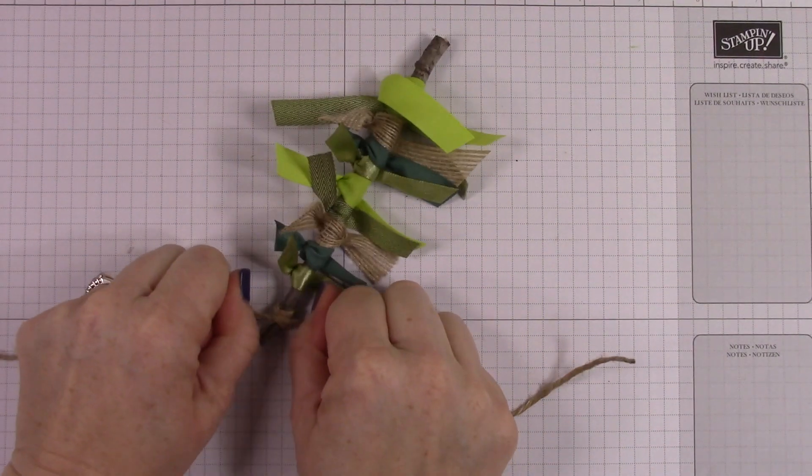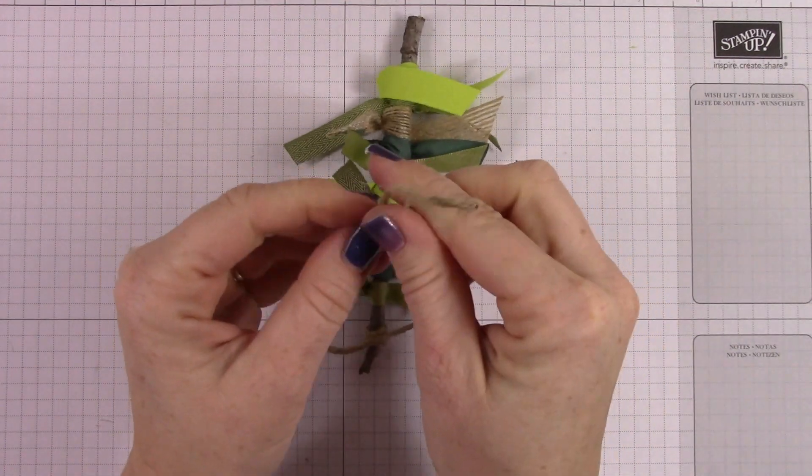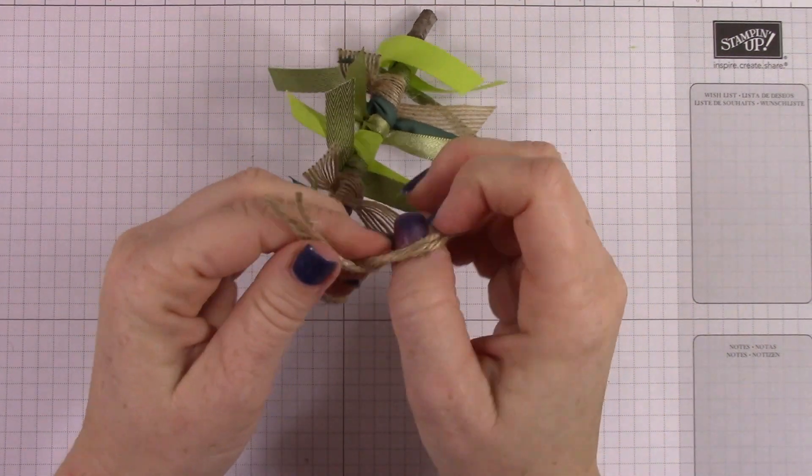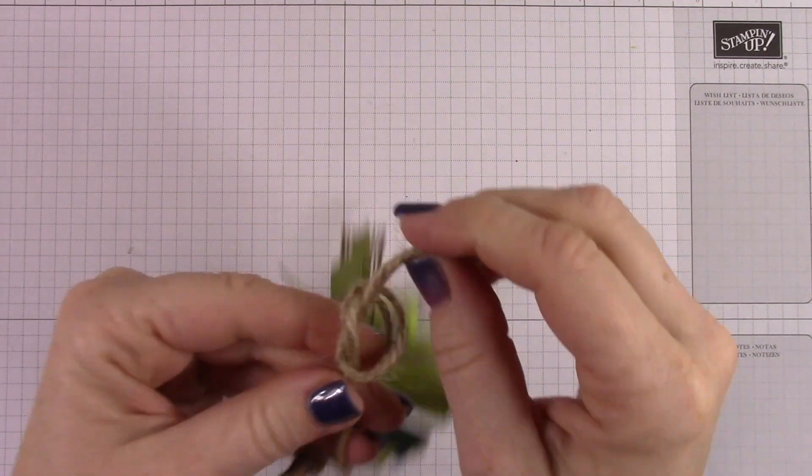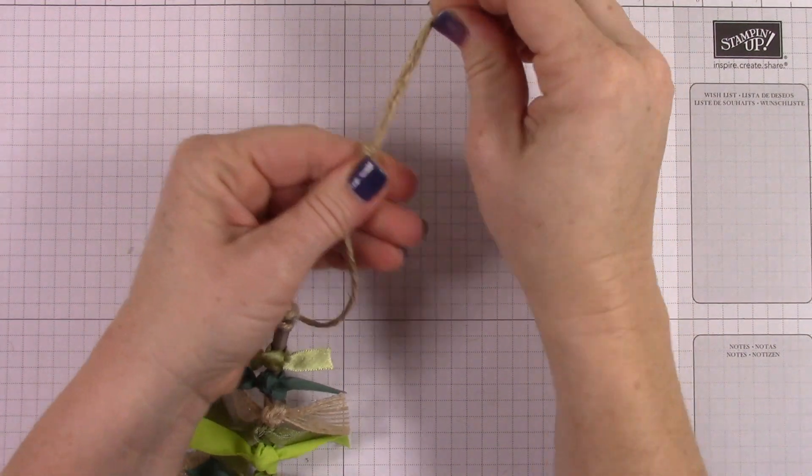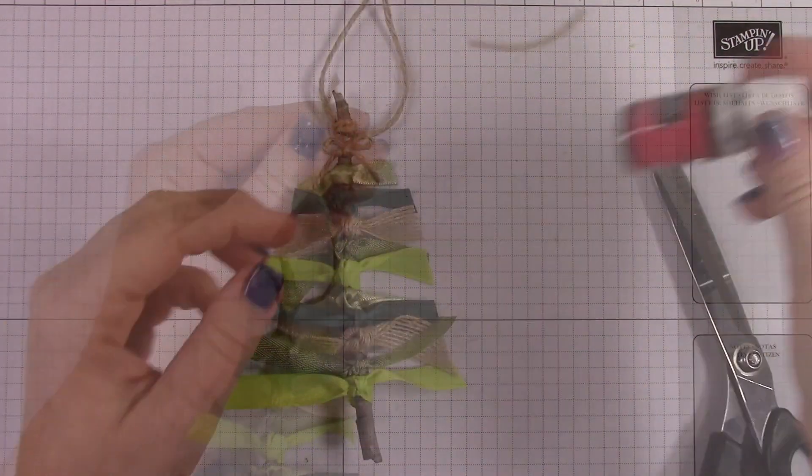So I'm gonna double knot this here at the back. So I've wrapped it around the front twice, double knotting in the back, and then I'm taking both ends, pulling them up and creating a little loop, and pulling a knot through, and then trimming the excess off. So now I've got my little hanger dilly bob.